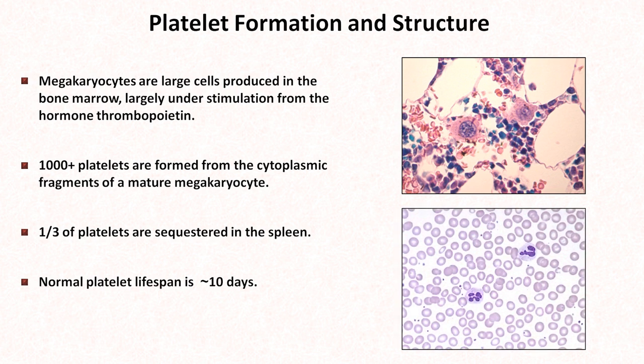In this peripheral blood smear, the many lavender circles with central clearing are the biconcave discs of red blood cells. The two larger cells with multi-lobed dark purple nuclei are white blood cells, and the tiny purple dots spread around among the other cells are the platelets. You can appreciate that they are much smaller than the other cells.